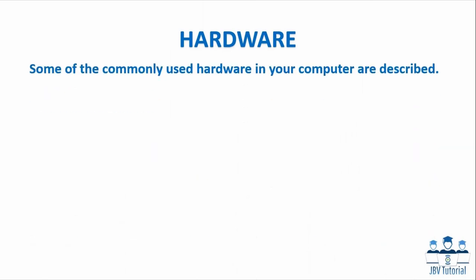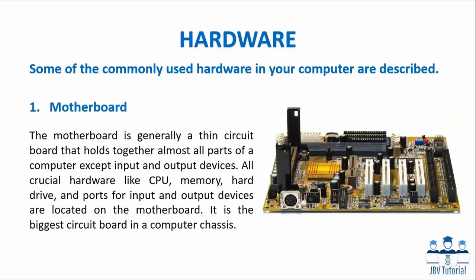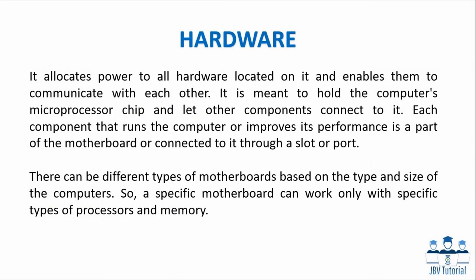Some of the commonly used hardware in your computer are described. First is the motherboard. The motherboard is generally a thin circuit board that holds together almost all parts of a computer except input and output devices. All crucial hardware like CPU, memory, hard drive, and ports for input and output devices are located on the motherboard. It is the biggest circuit board in a computer chassis, and it allocates power to all hardware on it and enables them to communicate with each other. It is meant to hold the computer's microprocessor chip and let other components connect to it. Each component that runs the computer or improves its performance is part of the motherboard or connected to it through a slot or port.